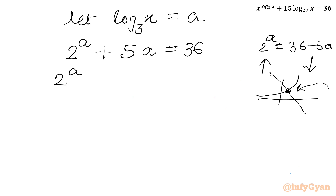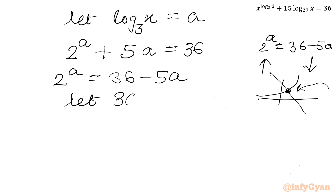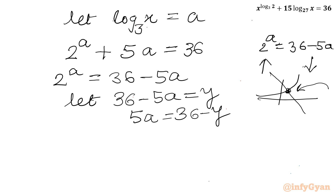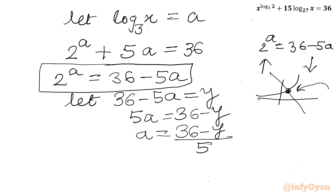Now I write our equation 2 power a equal to 36 minus 5a. Let us consider 36 minus 5a equal to y. From here I can write the value of a: 5a equals 36 minus y, so a equals 36 minus y, divided by 5.